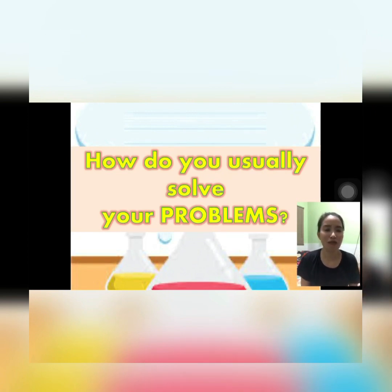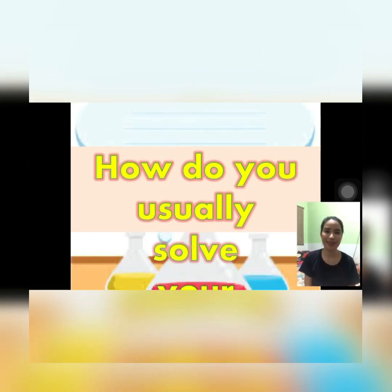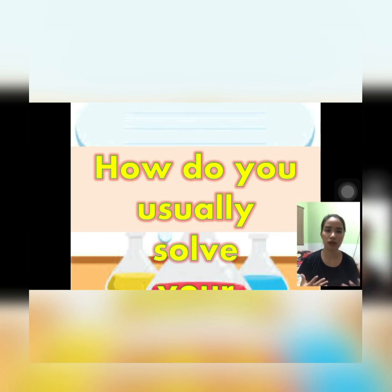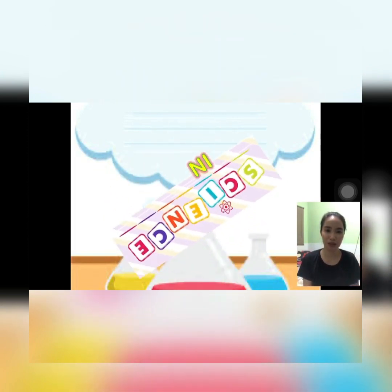First things first — how do you usually solve your problems? I solve my problem by analyzing it first, then thinking of different ways on how to solve it, and then applying it to test if it is successful or effective. In science, there is a proper method of dealing with experiments, dealing with problems, and answering questions — and that is the scientific method.